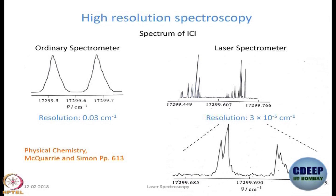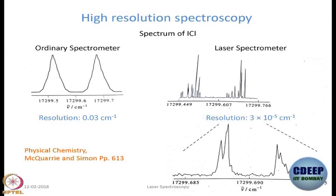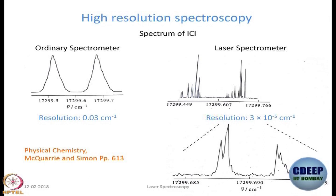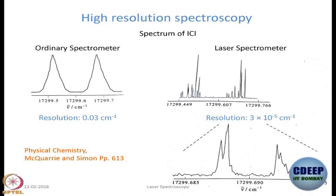I show you a spectrum of ICl - and by the way this discussion is available in Macquarie and Simon's book. First on an ordinary spectrometer - when I say ordinary spectrometer I am not doing justice to it, because the resolution is 0.03 centimeter inverse and we are talking about electronic spectroscopy. So this so-called ordinary spectrometer is actually extraordinary. In that spectrometer, which doesn't use a laser, the X axis reads 17,299.5 to 17,299.6 centimeter inverse - it is actually good resolution.